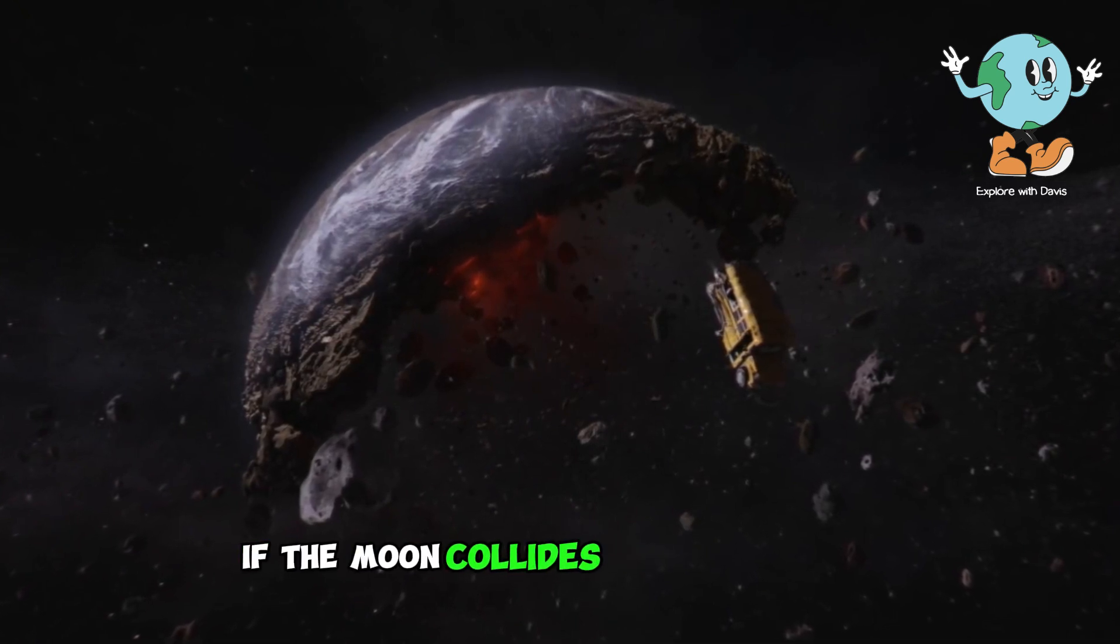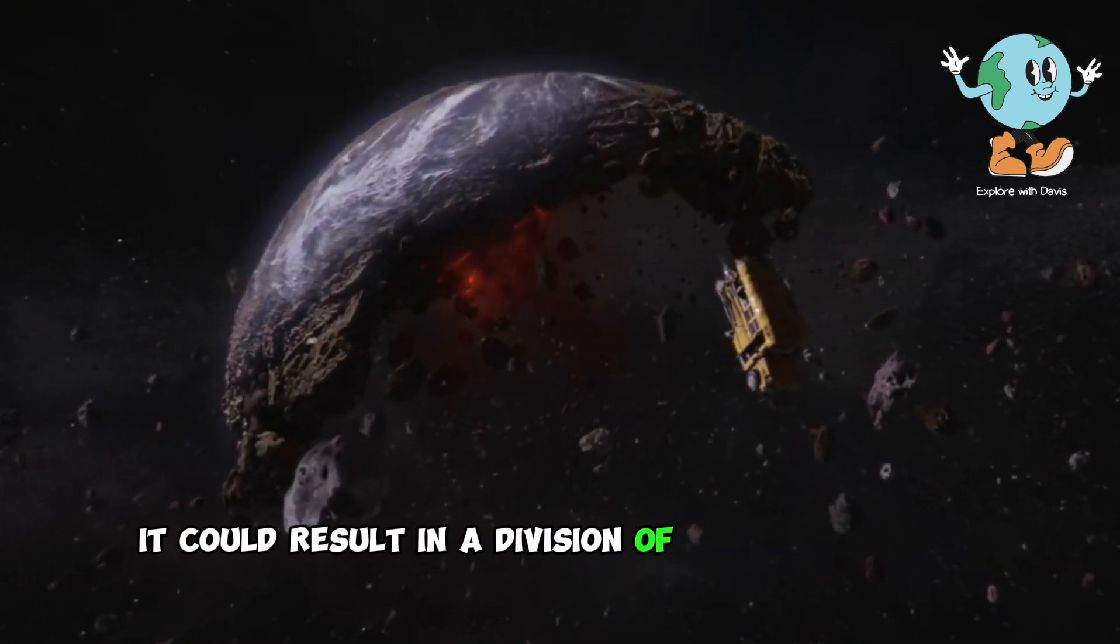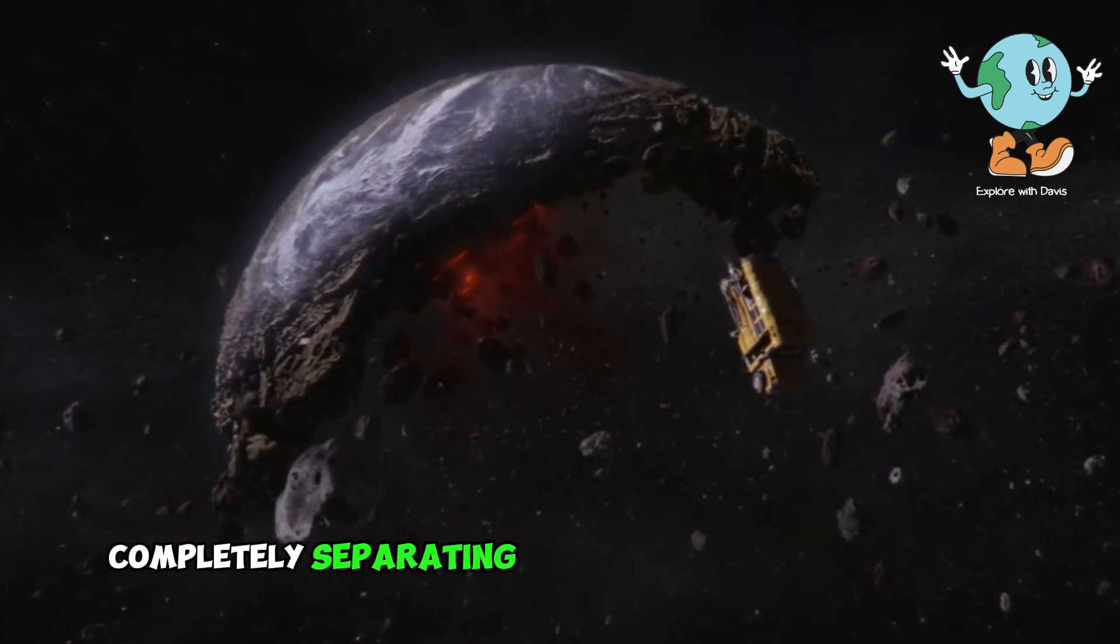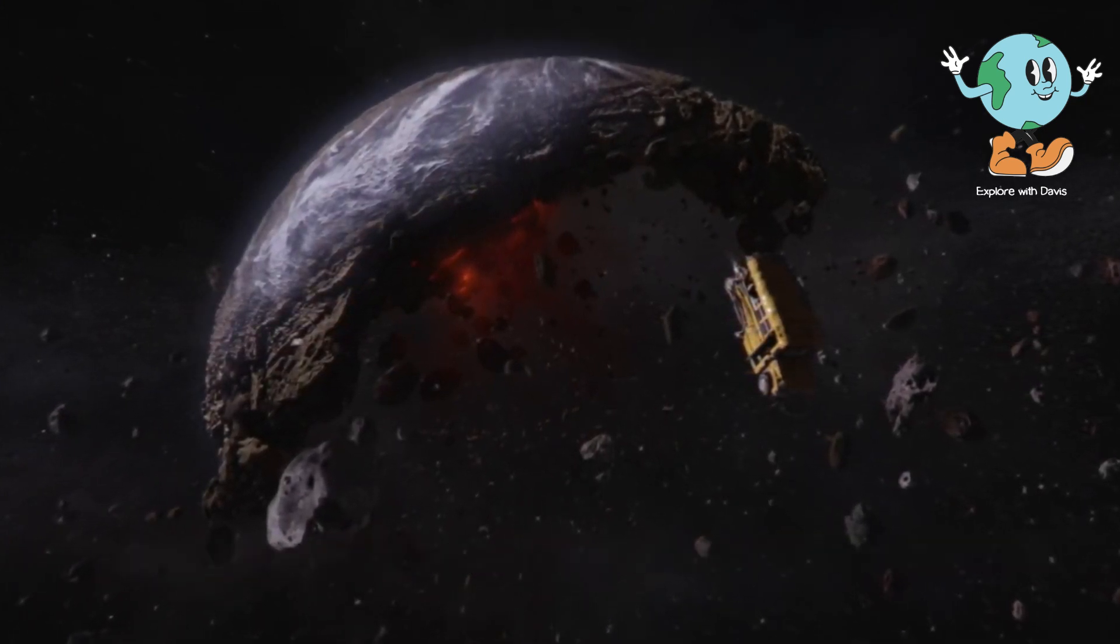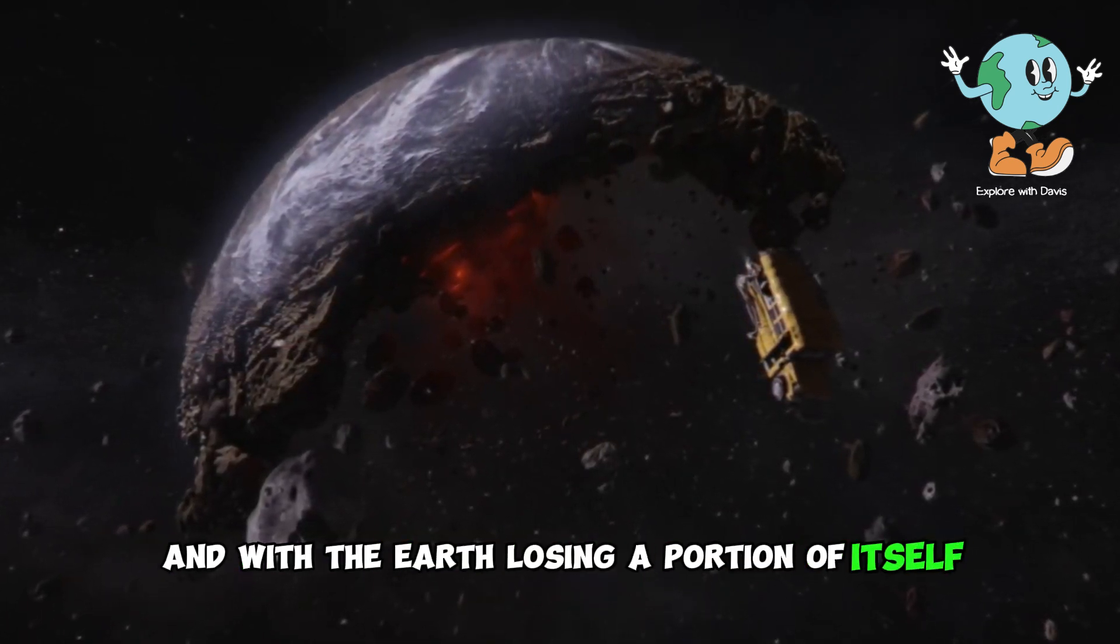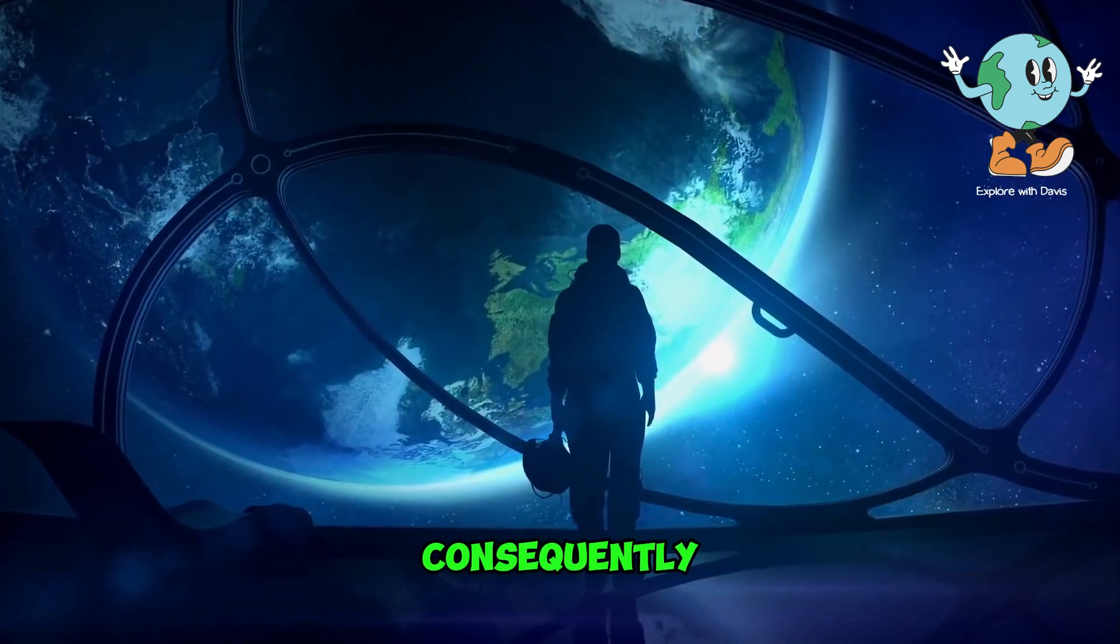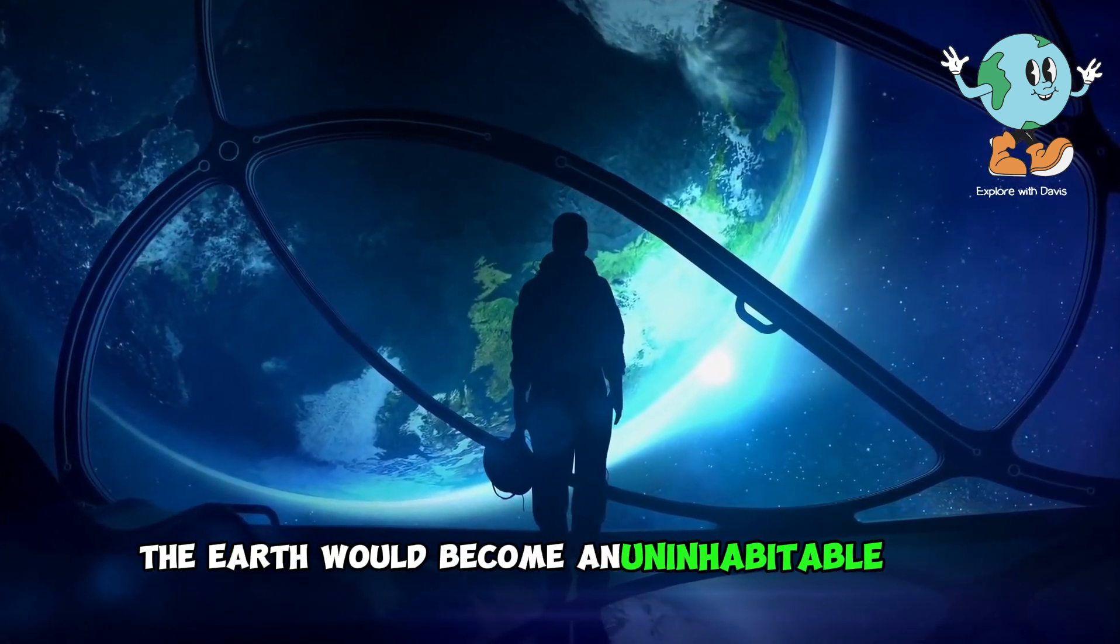In other words, if the moon collides with the planet with a certain level of force, it could result in a division of a section of Earth, completely separating and dispersing it into space. Essentially, this means that the planet would be missing a piece, and with Earth losing a portion of itself, there would be a profound disruption in Earth's system and mass. Consequently, Earth would become an uninhabitable place.